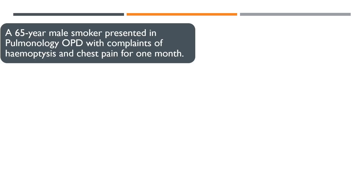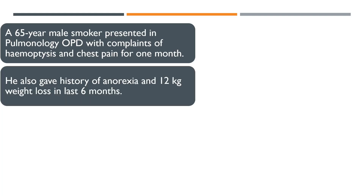So this is a 65-year-old male presented in the pulmonology OPD with complaints of hemoptysis and chest pain for one month. He also gives history of anorexia and 12 kg weight loss — a significant weight loss. These are the symptoms with which the patient has presented.